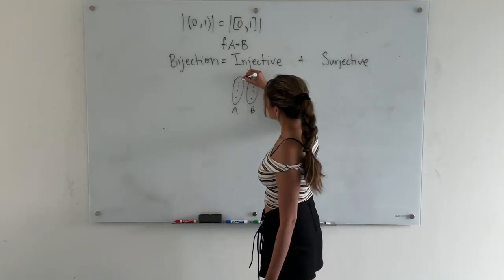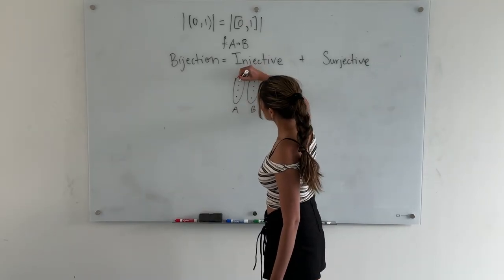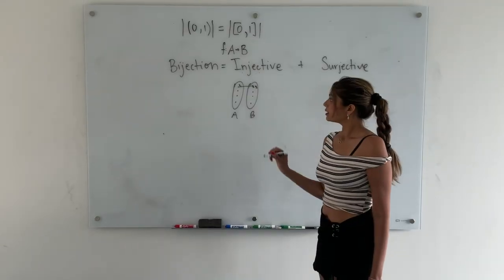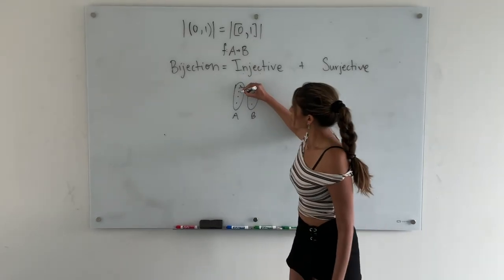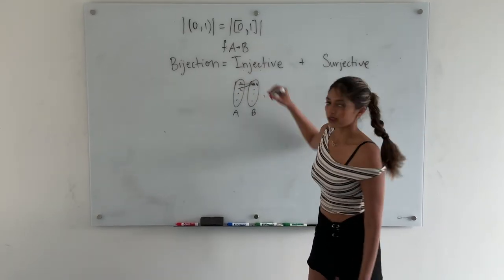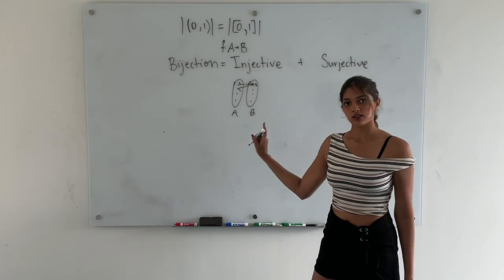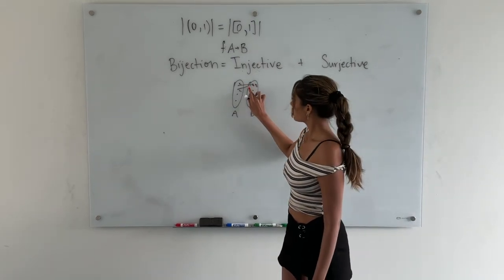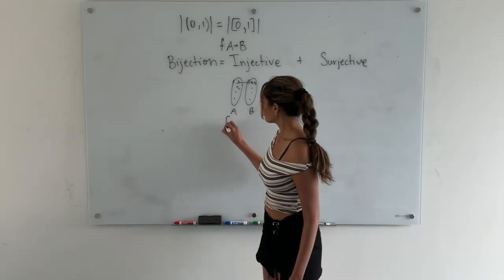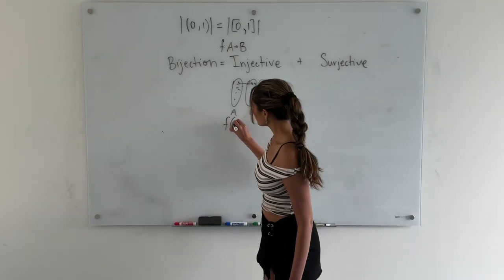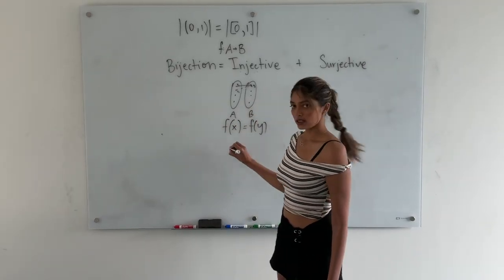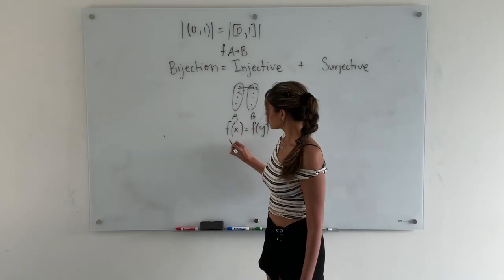So suppose some element x1 maps to y1 in B, and x2 also maps to y1 in B — then this function is not injective. In other words, we write this as: if f(x) equals f(y), then x must equal y.